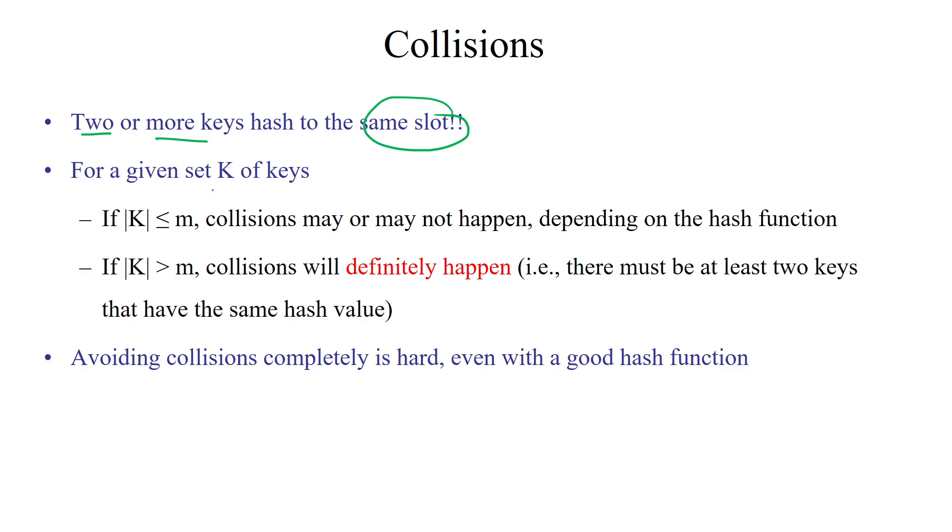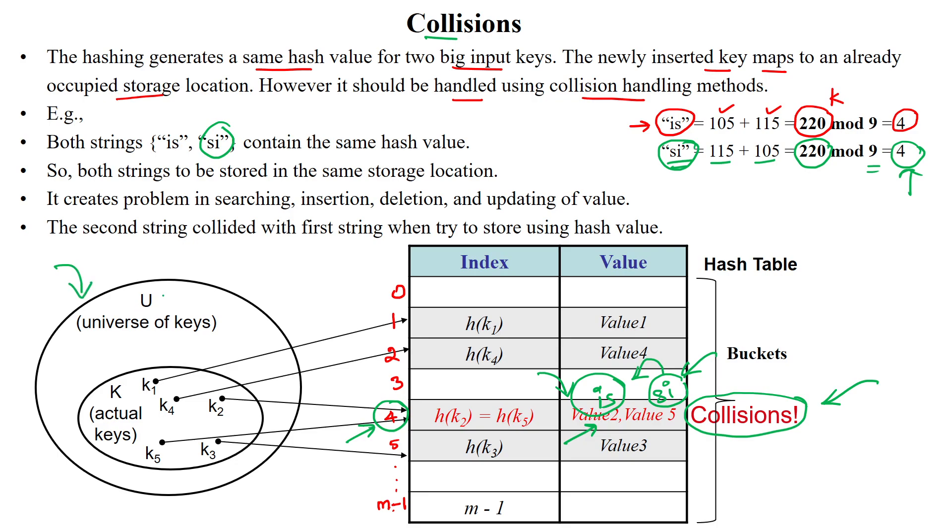The situation will be raised when the number of keys, number of keys greater than M. Look at that, this is the universe of keys. We are having, for example, 100 keys. In that 100 keys, our K is here, we are taking 50 number of keys.